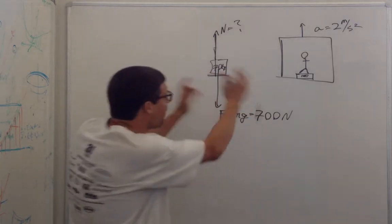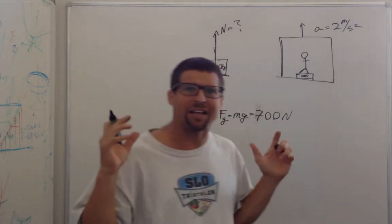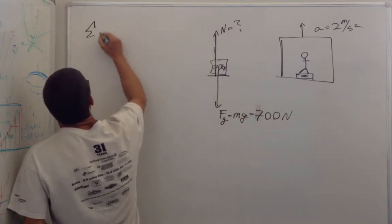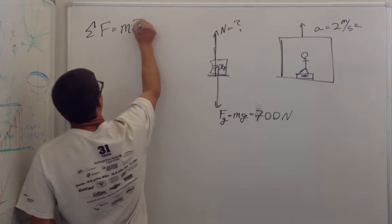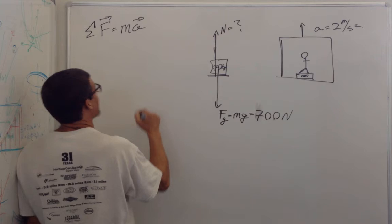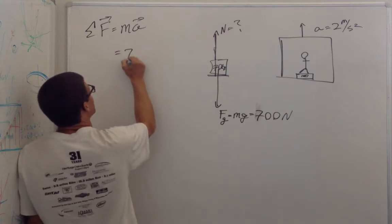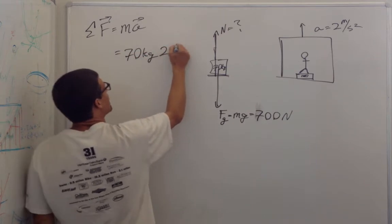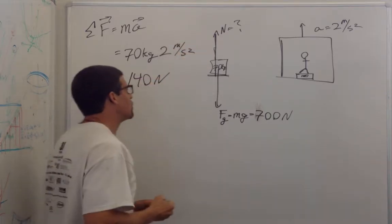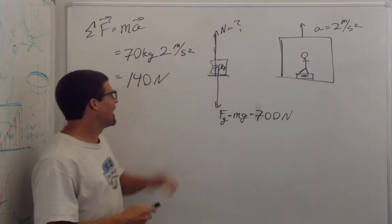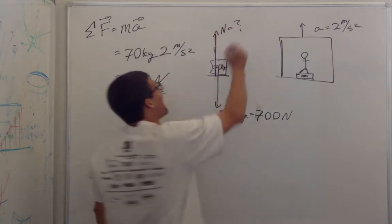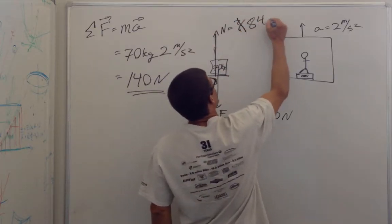And so I'm looking for force. I know this has got to be a dynamics problem because I'm talking about forces and acceleration, and I just say that the vector sum of the forces is equal to mass times acceleration. And I know the mass, 70 kg, and I know my acceleration, so that's 70 kg times 2 meters per second squared, which is 140 newtons. So the total force on me has to be 140 newtons upward. So this has to be 840 newtons.